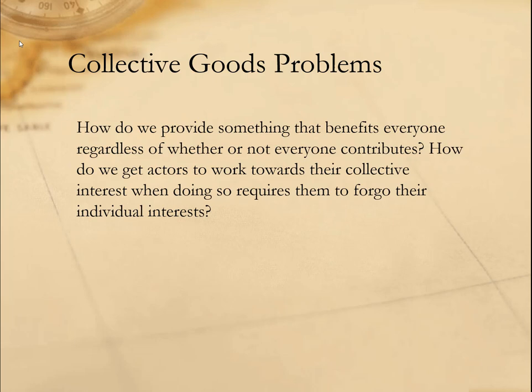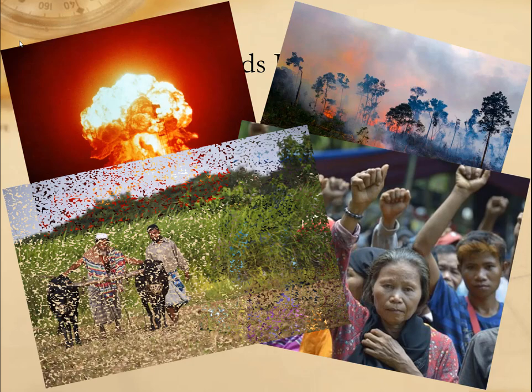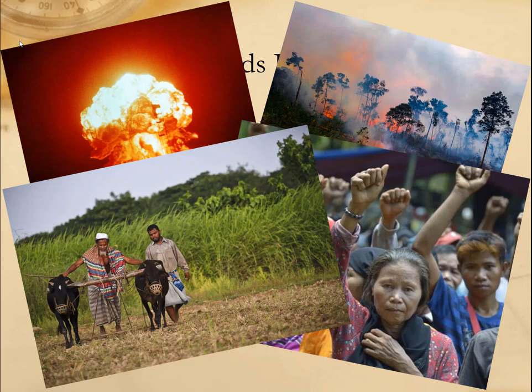The unique nature of the global system makes traditional solutions to the collective goods problem less workable. At the domestic level, the state can address many of the issues that arise from the collective goods problem — legal systems can limit or enforce access to goods, and the state can use taxes to provide public goods. Indeed, historically this has been viewed as one of the primary responsibilities of the state. But at the international level it's more difficult. How do we prevent nuclear proliferation, protect the environment, guarantee human rights, or ensure a healthy and well-fed global population? All of these questions invoke the collective goods problem at the international level, and are questions we'll return to throughout the semester.